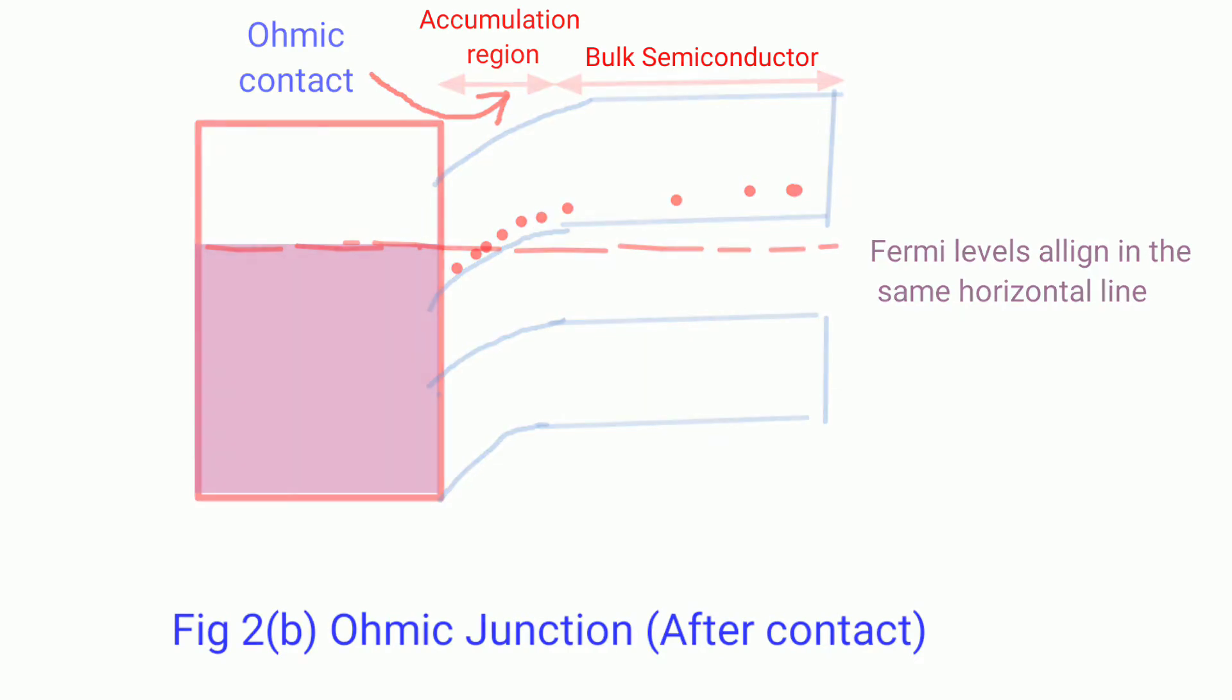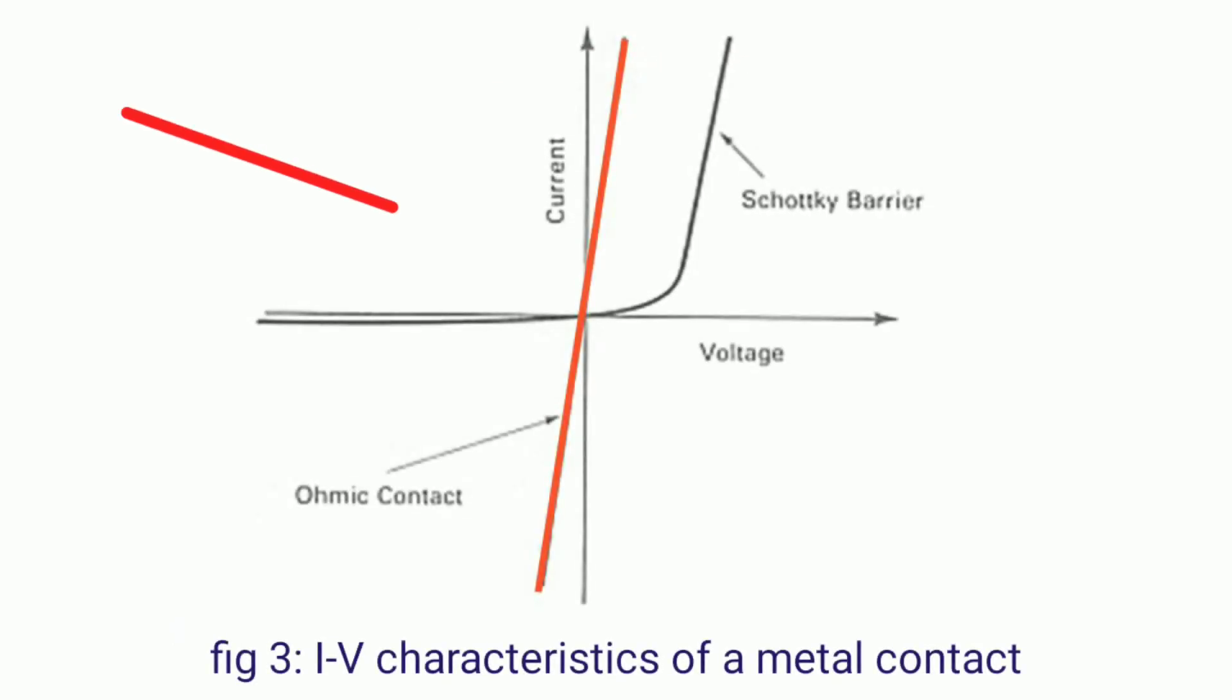It means an ohmic junction behaves as a resistor conducting in both forward and reverse bias as shown in this diagram.